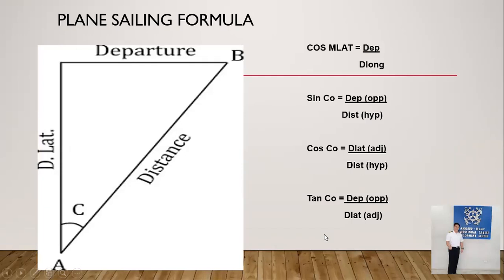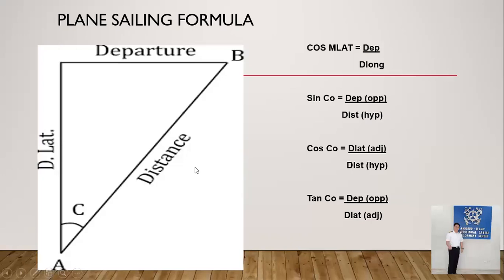With the plane sailing formula, it is about the quadrantal course, which is the letter C. Your point A is your point of departure — meaning where you will leave — and then your point B is your point of arrival or destination. With that you will have a distance, which is the longest side, using the trigonometric functions you've learned. Angle A's opposite is the departure, and angle B will be the adjacent side — small letter B — and C will always be the longest side.